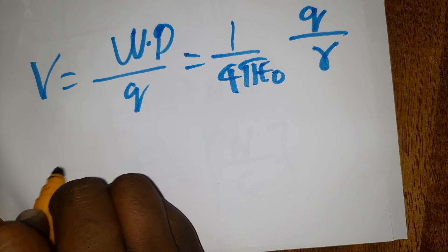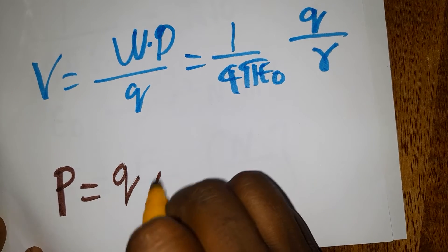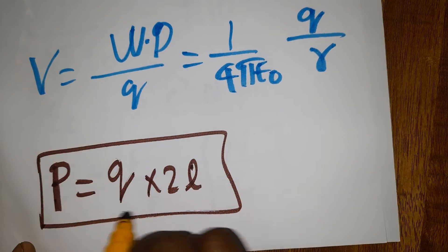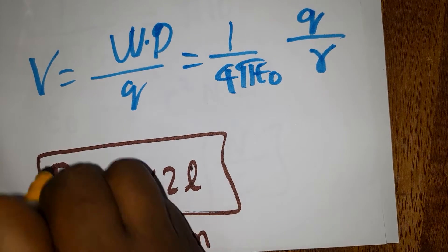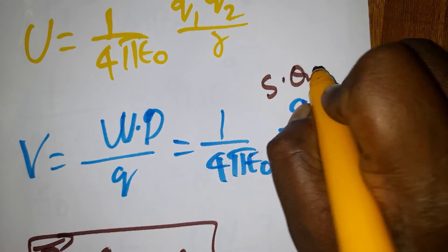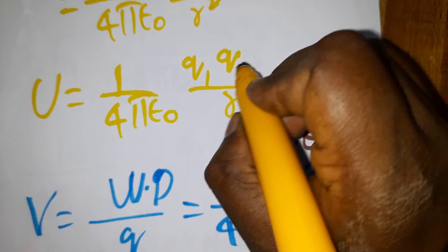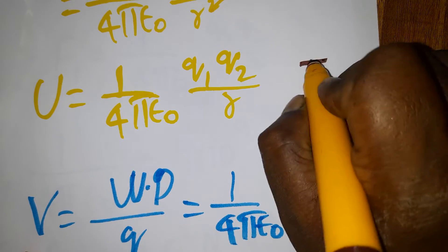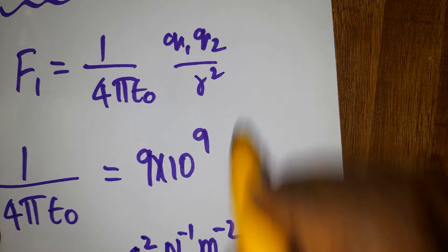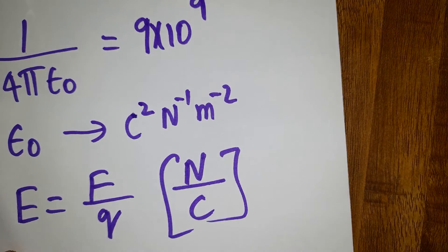Dipole moment p equals one of the charges times the distance between the two charges. The unit of dipole moment is coulomb-meter, and it is a vector quantity. Voltage is a scalar quantity with unit volt. Energy is a scalar quantity with unit joules. Force unit is newton and electric field unit is newton per coulomb.